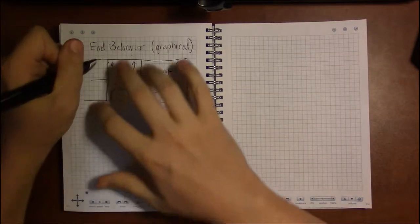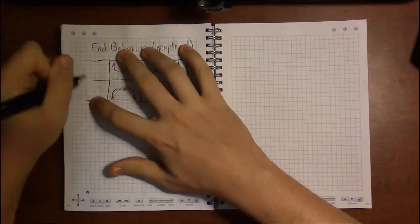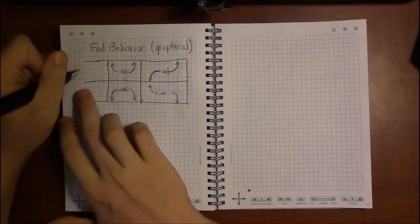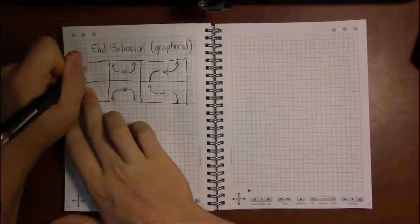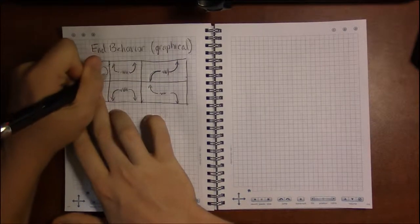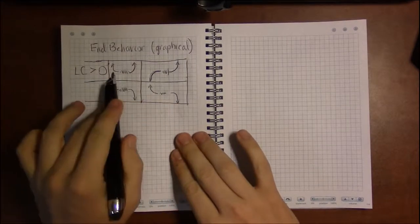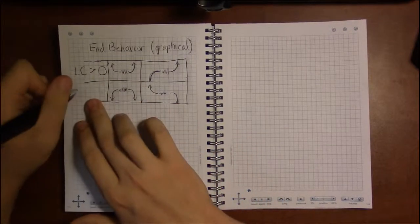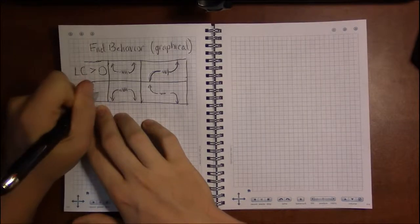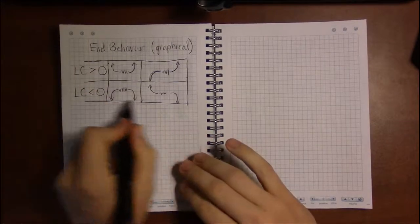Now I told you this had something to do with the degree and the leading coefficient. Well, if the leading coefficient, or if you allow me LC, is positive, then you're in the top row. If the leading coefficient is negative, then you're in the bottom row.